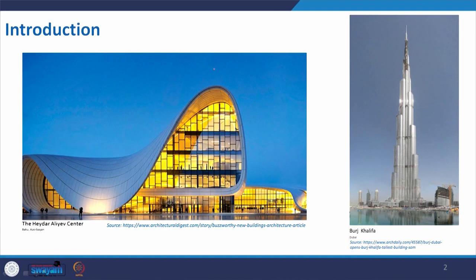Let us start with these two photographs placed on the first slide. One is a museum building designed by famous architect Zaha Hadid. The other one is Burj Khalifa, a very famous tall building in Dubai. The first one, the museum, is basically a form created with multiple curves and supported with steel, glass and other materials to give a pleasant look. The other one, Burj Khalifa, is a tall structure that is really fantastic to watch.